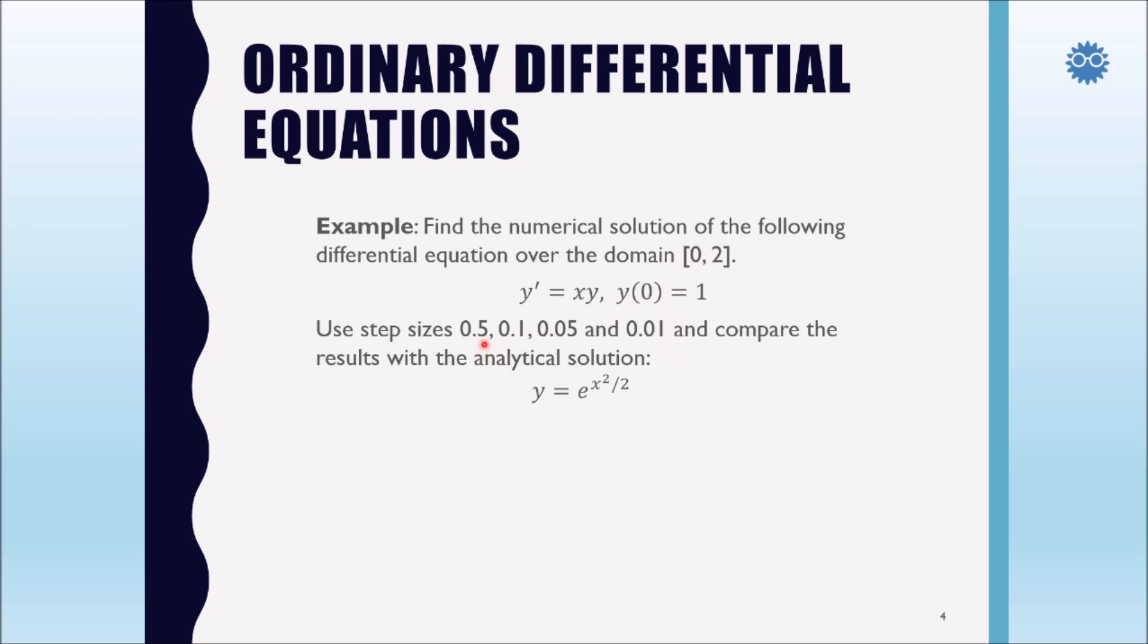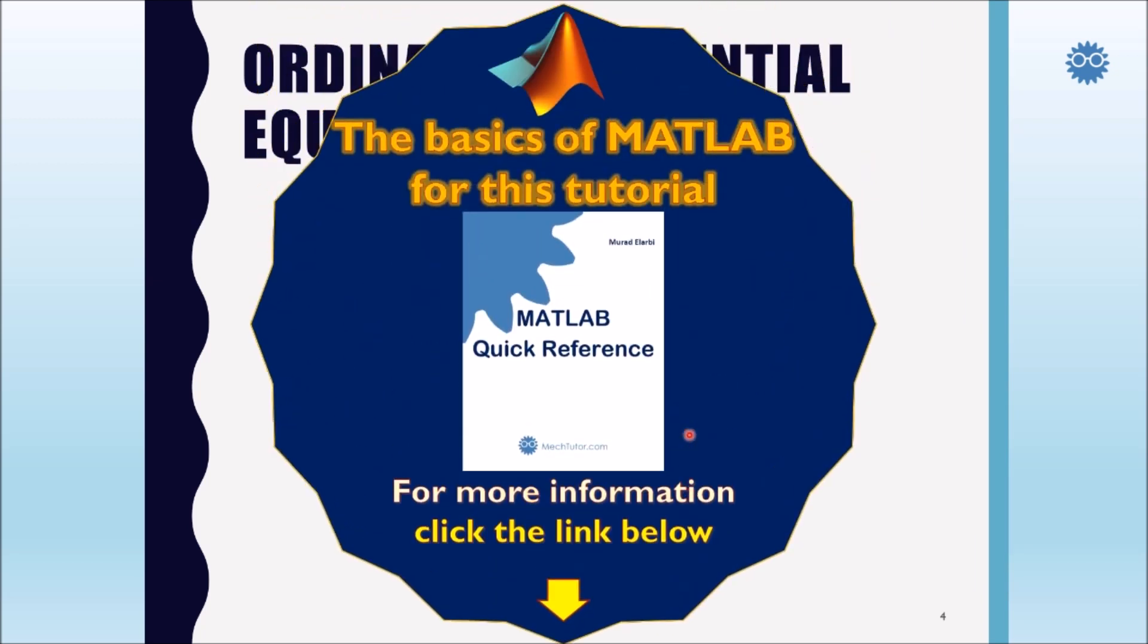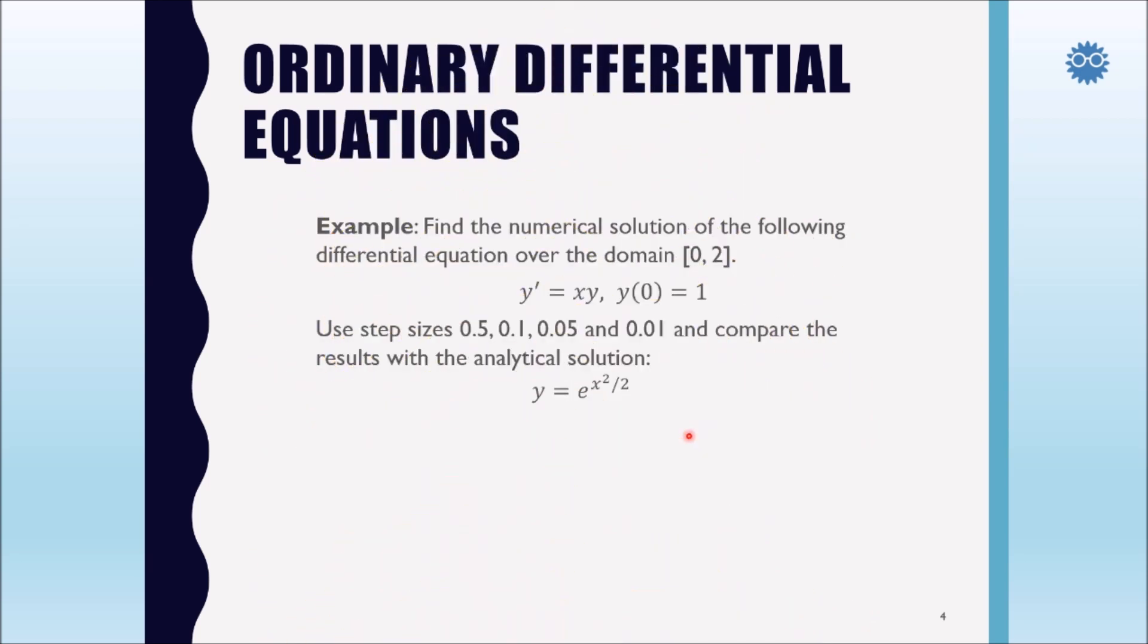We are required to have the solution at different values of step size, 0.5, 0.1, 0.05, and 0.01, in order to see the improvement in solution according to the different value of h, in addition to compare with the results of the given analytical solution, y equals e to the x squared over 2.